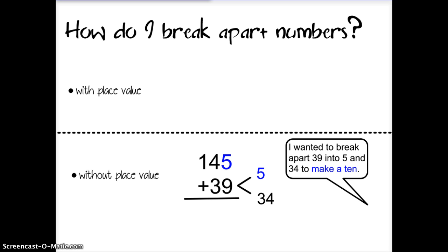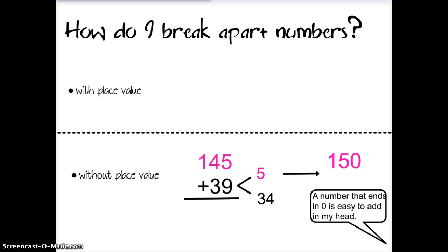And as you can see, the five in 145 plus five will make a new ten. 150. And I know that any number that ends in zero is easy to add in my head. So I have 150 plus the remaining 34. And I get a sum of 184.